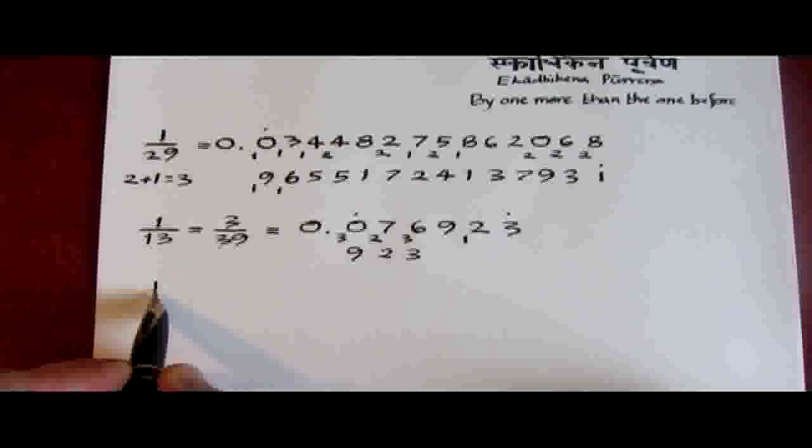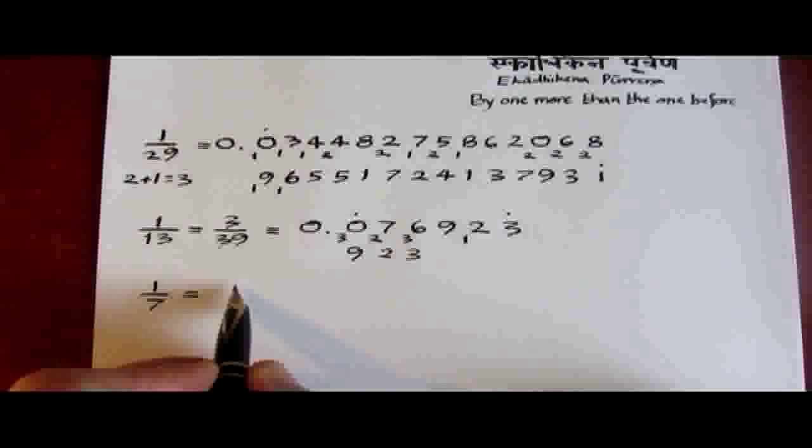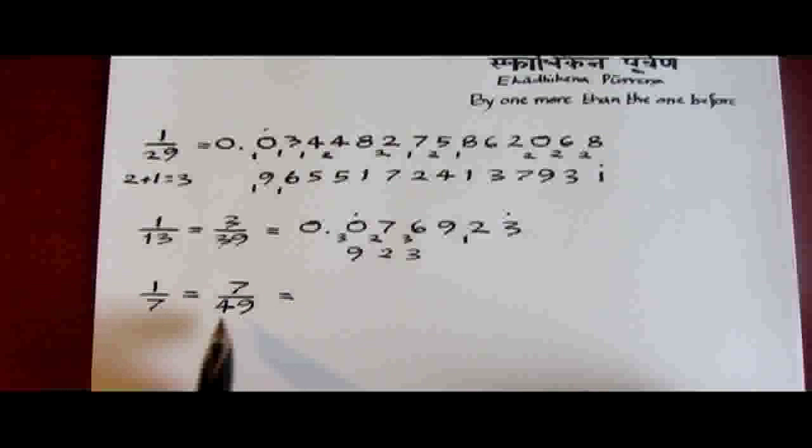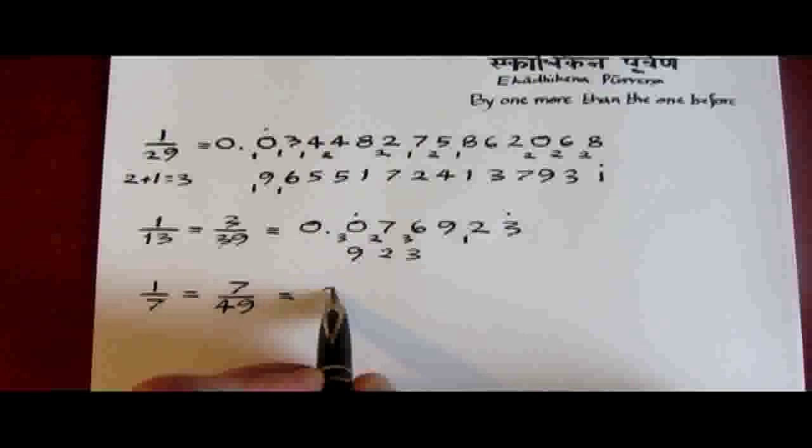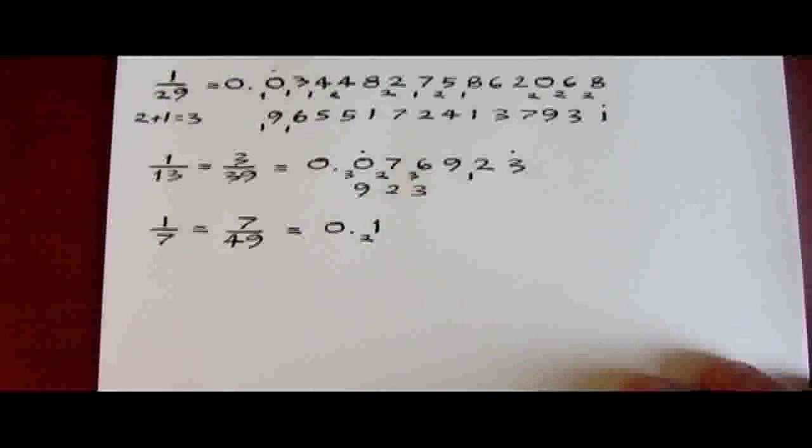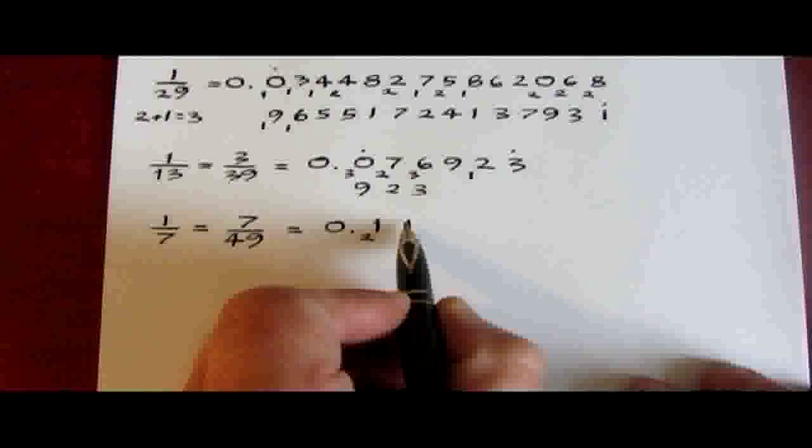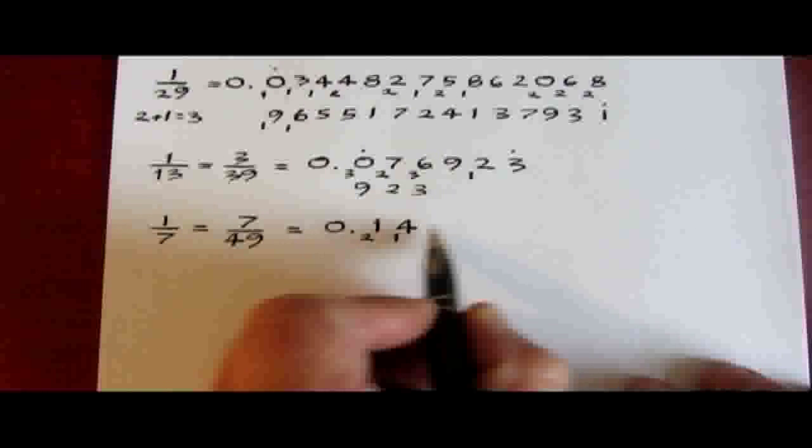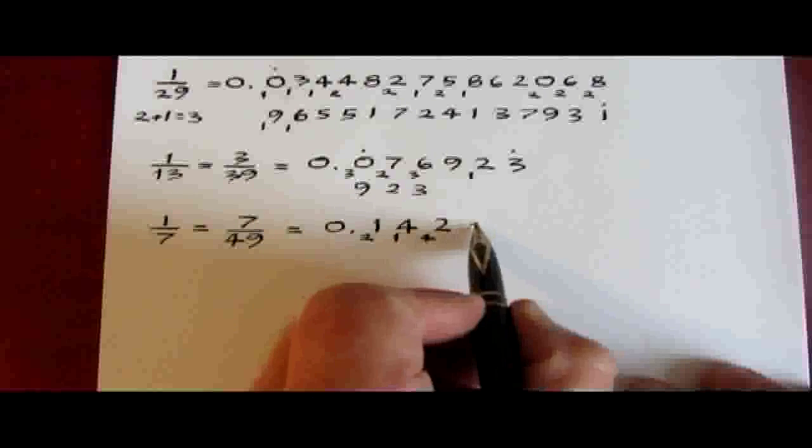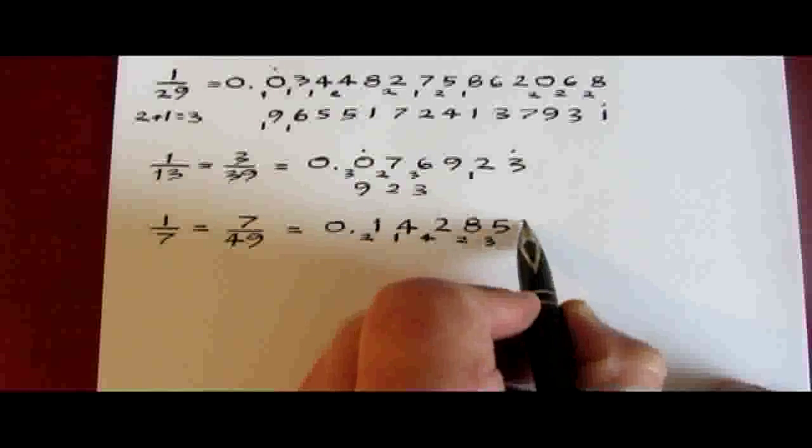The same happens with 1 seventh. We can express that as 7 over 49. And again, use the same rule, this time with the divisor 5. 5 divided into 7 is 1, remainder 2. 5 into 21, 4, remainder 1. Then we have 2, remainder 4. 8, remainder 2. 5, remainder 3. And 7.